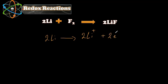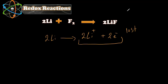If the electrons appear after the arrow — on the product side — then the species lost electrons. OIL RIG: oxidation is losing. So this half equation is oxidation.